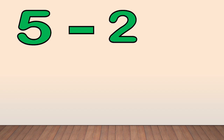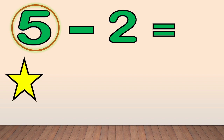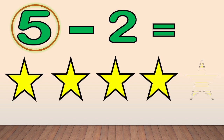Today, we are going to use pictures to do subtraction. Now, let's get started. Let's write the number 5 minus 2 equals. Now, draw stars equal to the minuend — that is 5. 1, 2, 3, 4, 5.